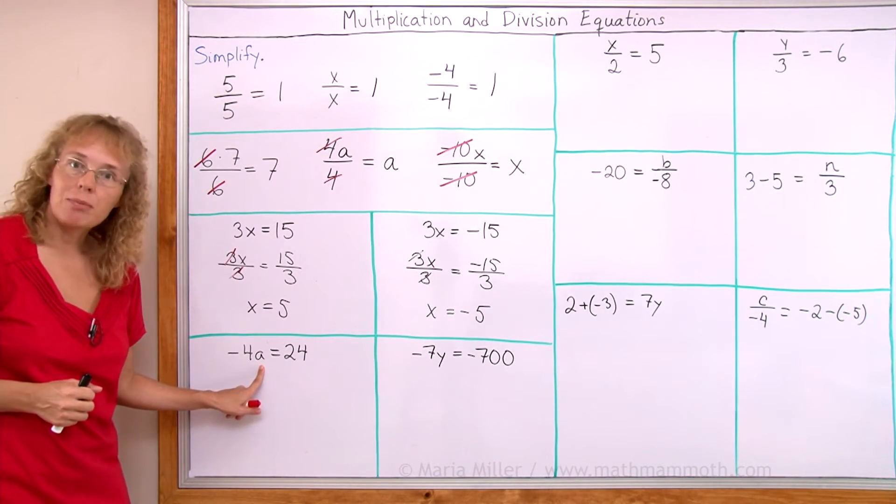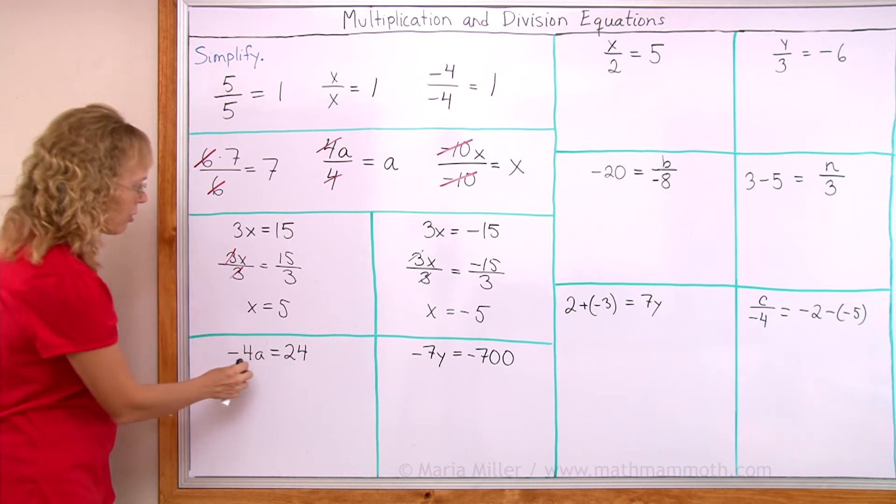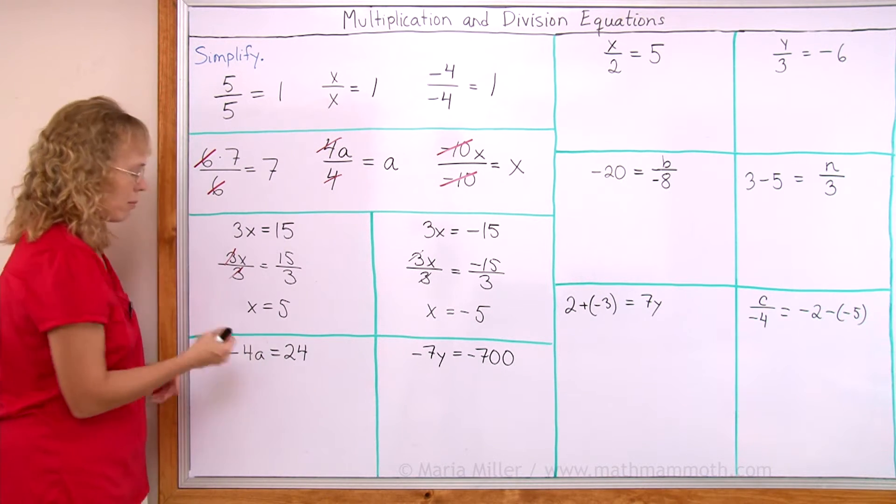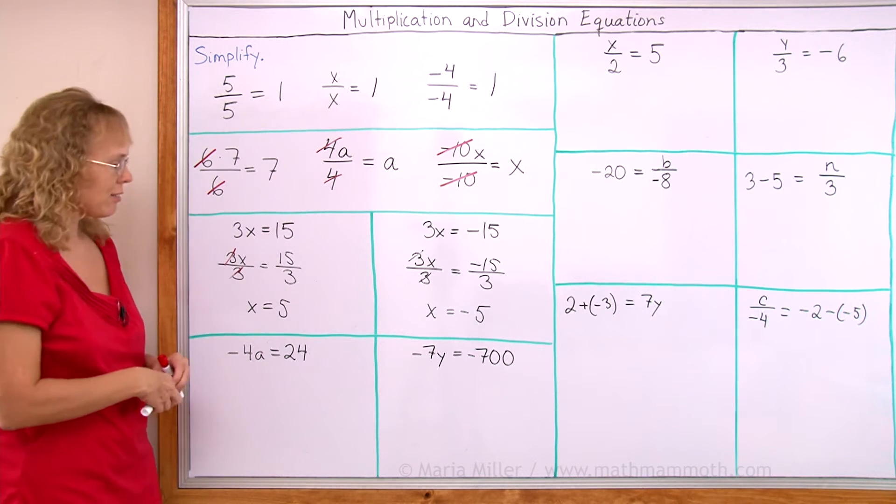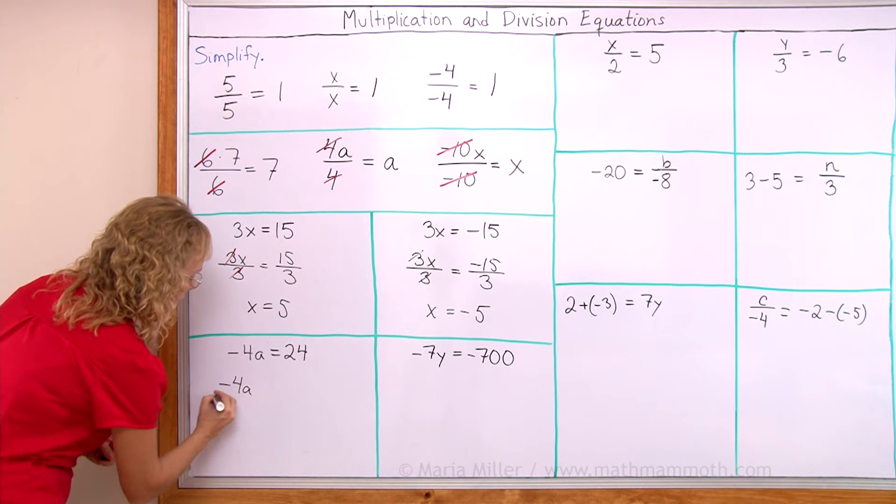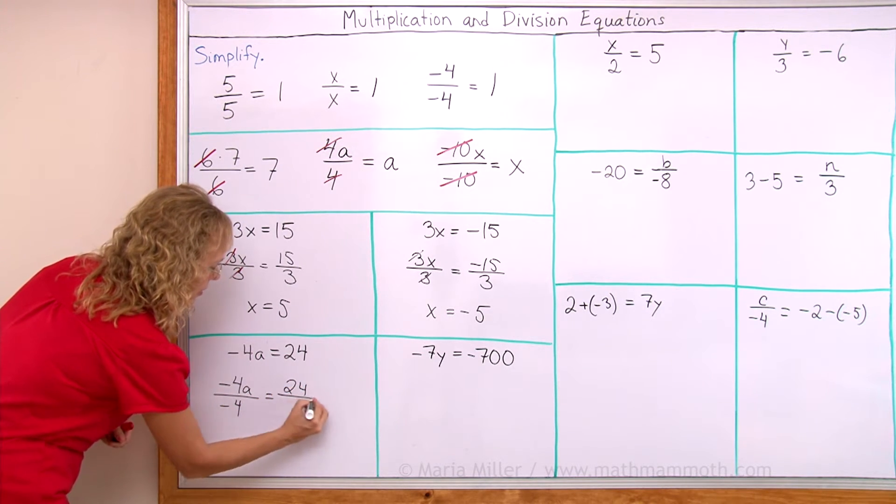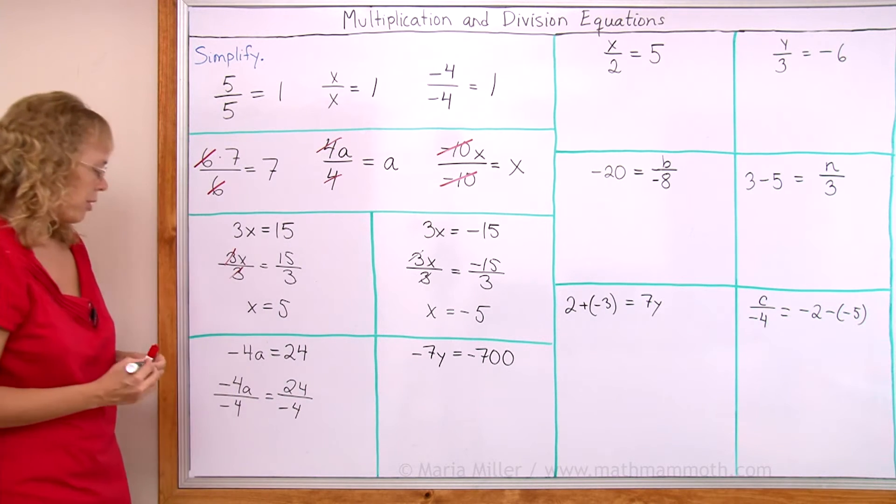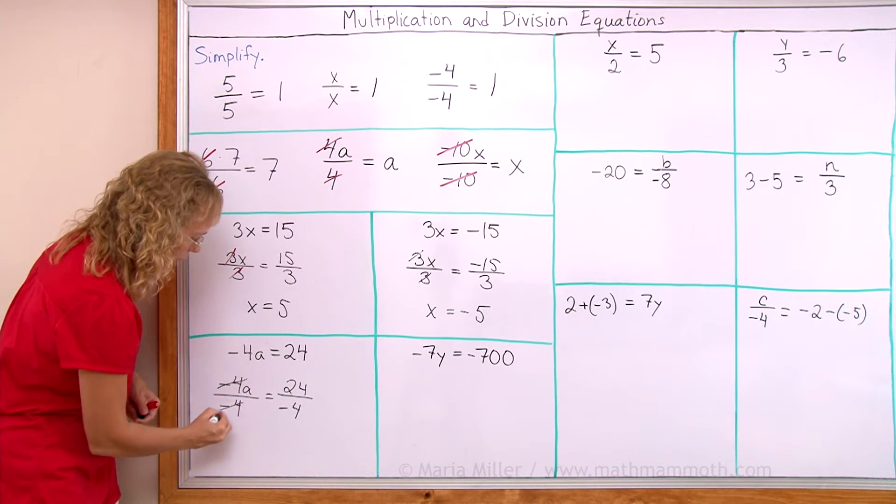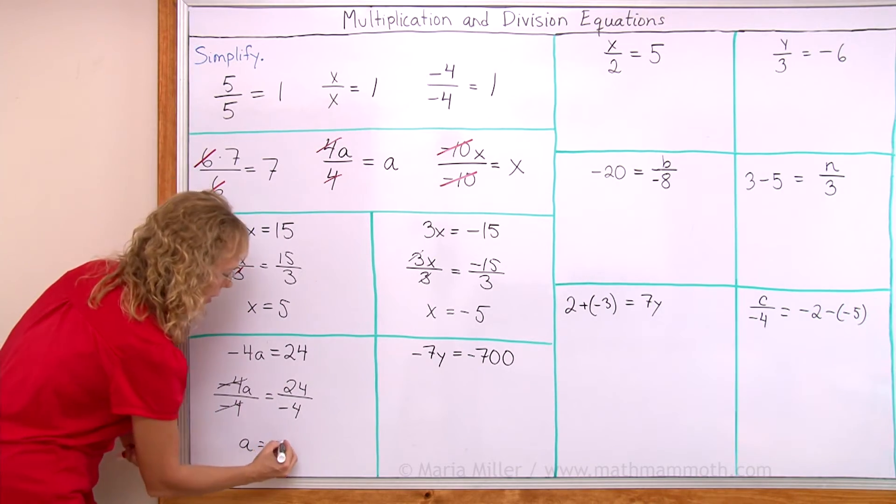Over here, look. The variable is multiplied by a negative number. Negative 4. So we need to divide by this number. Both sides divided by negative 4. So we have negative 4a divided by negative 4. And over here, 24 gets divided by negative 4. And now, over here, these cancel. So we are left with a alone. And over here, we get negative 6.